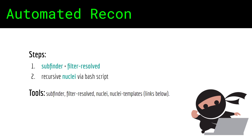The basic idea is to run Subfinder to discover subdomains. Subfinder is very fast and highly configurable, meaning you can make it faster or more thorough depending on the different sources and ways you have it find the subdomains you're looking for. After Subfinder, you run Filter Resolve to save the domains that are up and running. Then in step 2, you run Nuclei recursively to discover potential vulnerabilities and bugs.